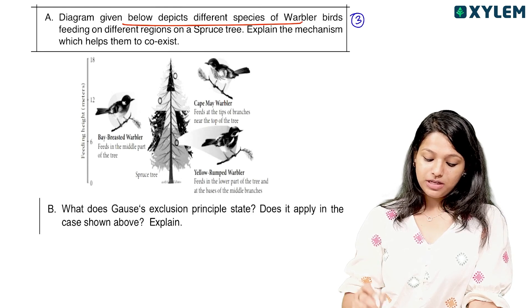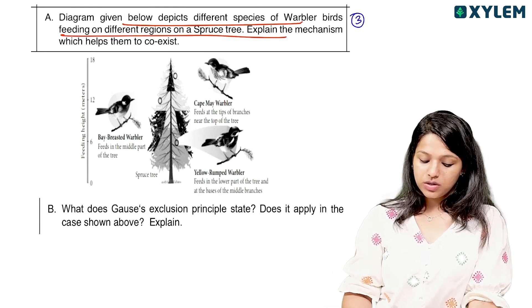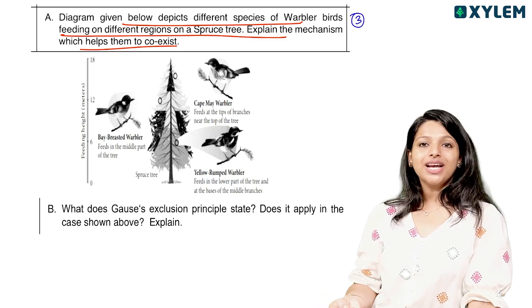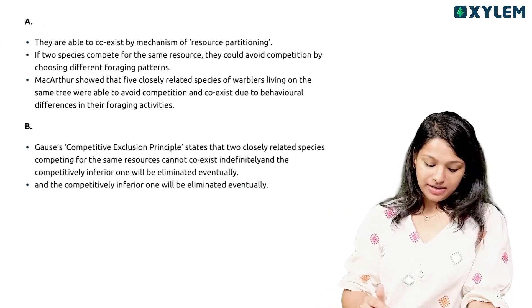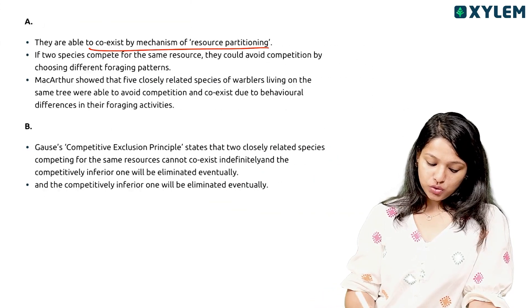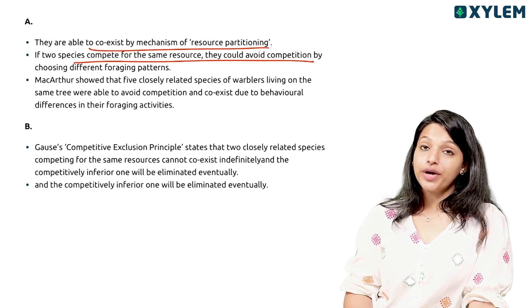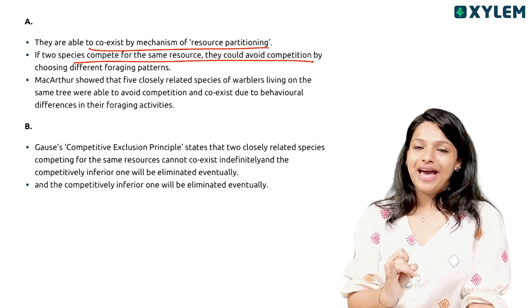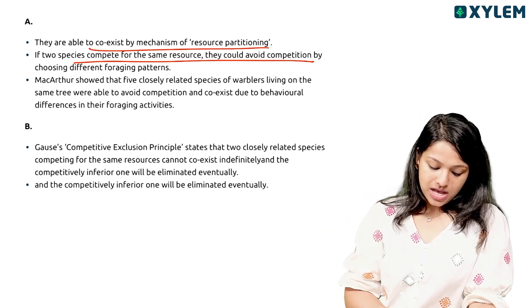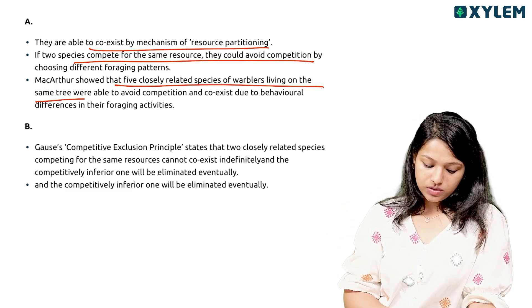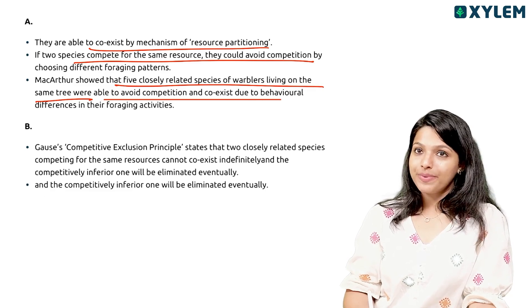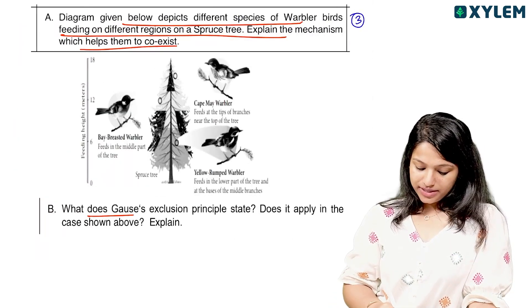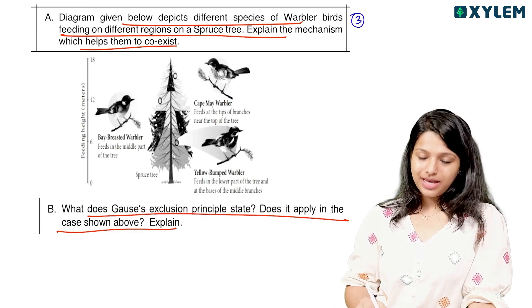A diagram depicts different species of warblers feeding on different regions of a spruce tree. The mechanism is called resource partitioning. Two species that compete for the same resource avoid competition by having different feeding patterns. It shows that five closely related species of warblers living on the same tree are able to avoid competition due to behavioral differences in their foraging pattern.